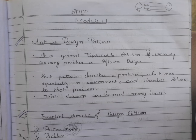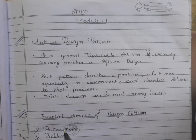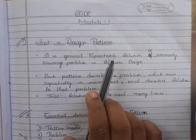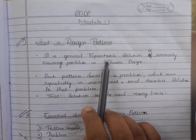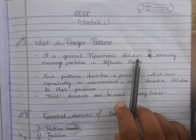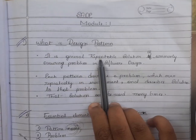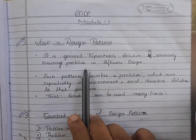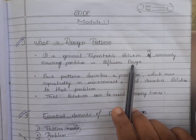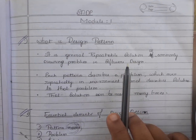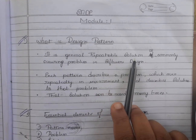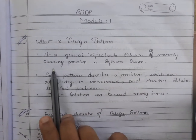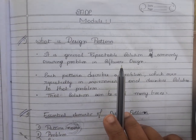Let us begin with the first topic of the module: Design Pattern. So what is a design pattern? It's a general repeatable solution to the commonly occurring problem in software design. As the statement implies, it's a solution to commonly occurring problems in software design.